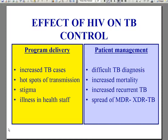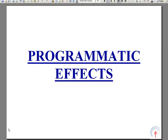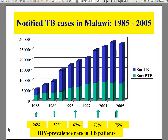HIV has adverse effects on programmatic delivery and on patient management. The programmatic challenges include increased TB cases, hot spots of transmission, stigma, and illness in the healthcare workforce. The patient management issues include difficult diagnosis, morbidity, mortality, recurrent disease, and facilitation of the spread of drug-resistant tuberculosis. This slide shows the notified TB cases in Malawi over a 20-year period, rising from 5,000 cases per annum in 1985 to 27,000 in 2005, with a disproportionate rise in smear negative tuberculosis, and HIV prevalence in TB patients plateauing at 75%.